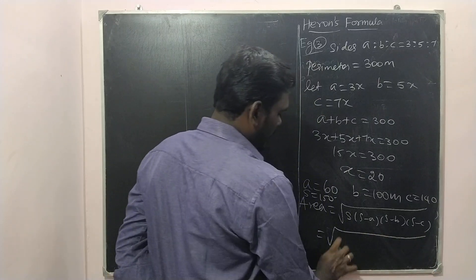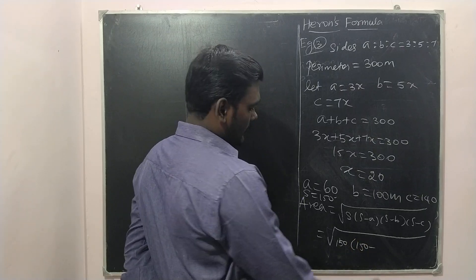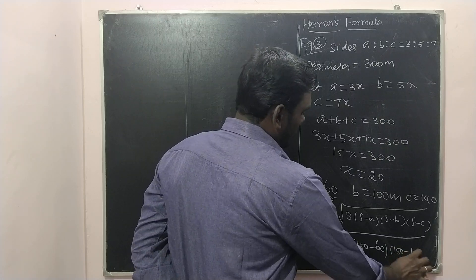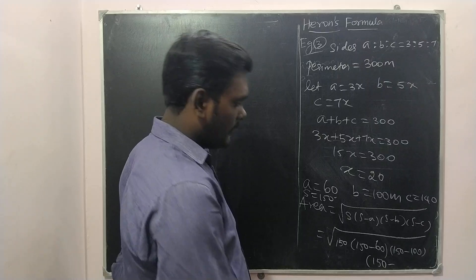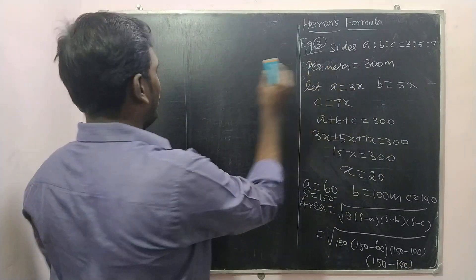So square root of 150 into 150 minus a is 60 into 150 minus b is 100 into 150 minus c is 140. Now simplify this.